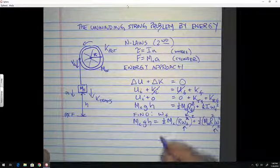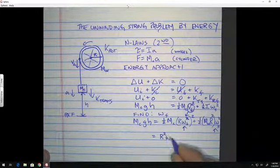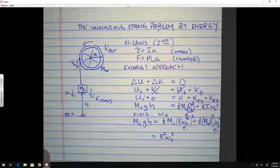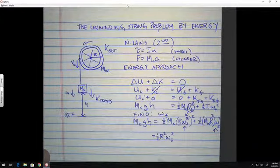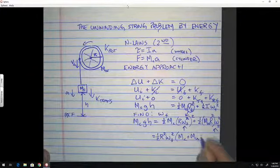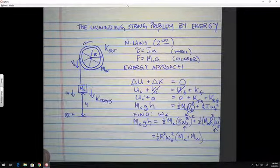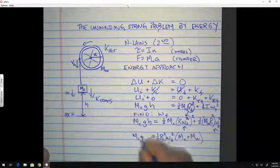And we can probably factor them out here. It looks like we're going to be factoring out an r squared omega final squared. We're also factoring out a one-half, I think. And that's going to leave us with the mass of the cylinder plus the mass of the wheel. That's nice. And that's equal to the mass of the cylinder times g times h.